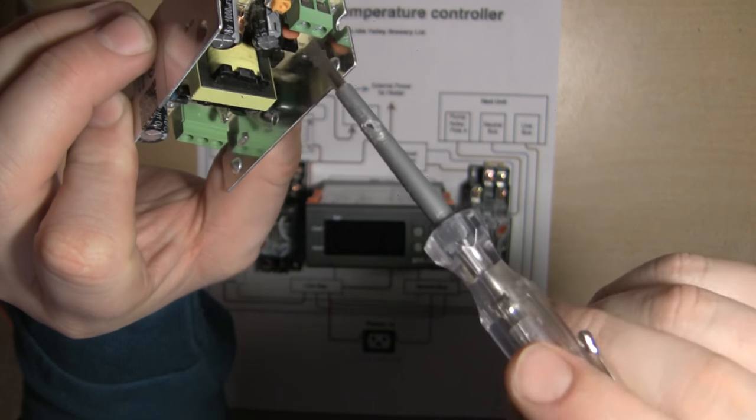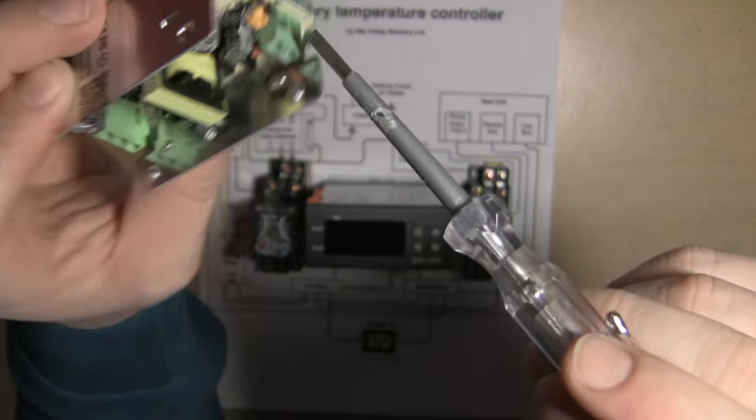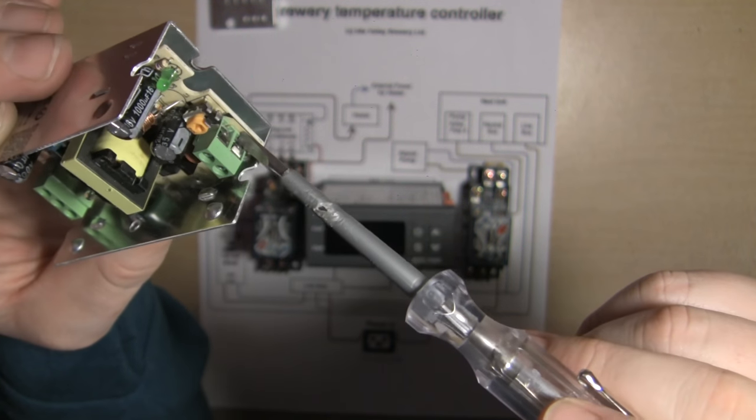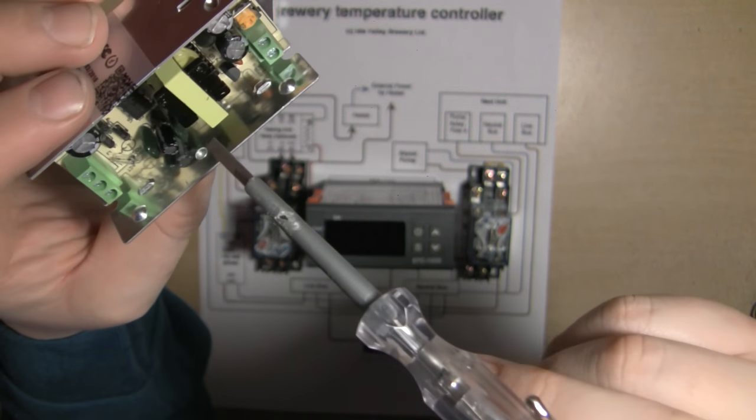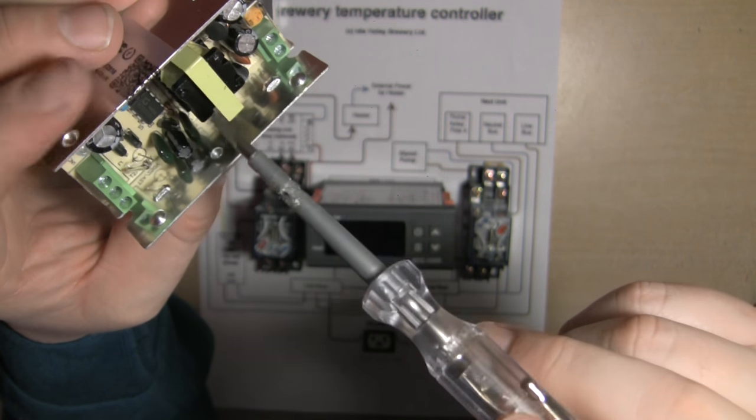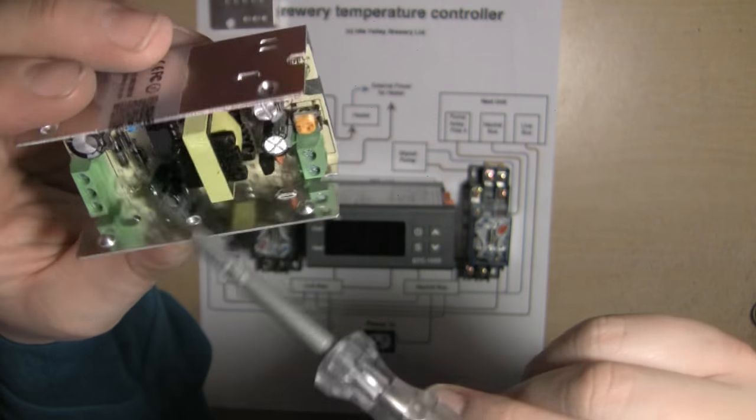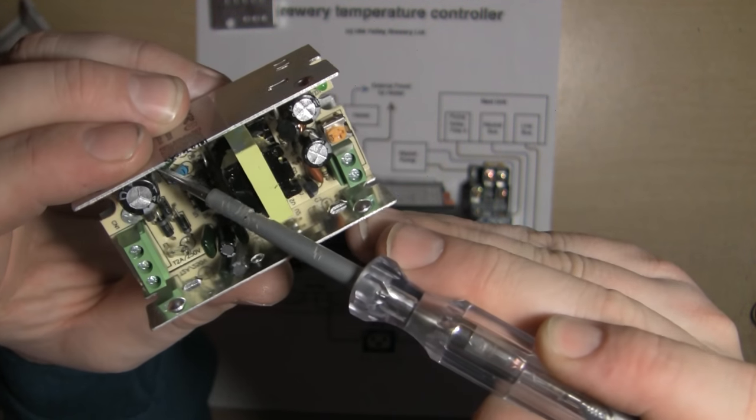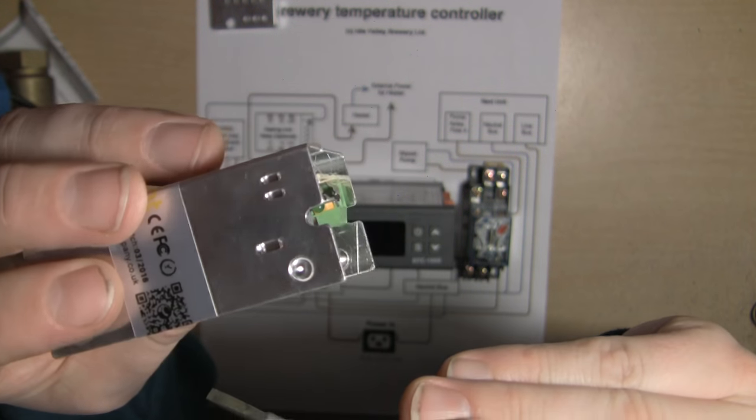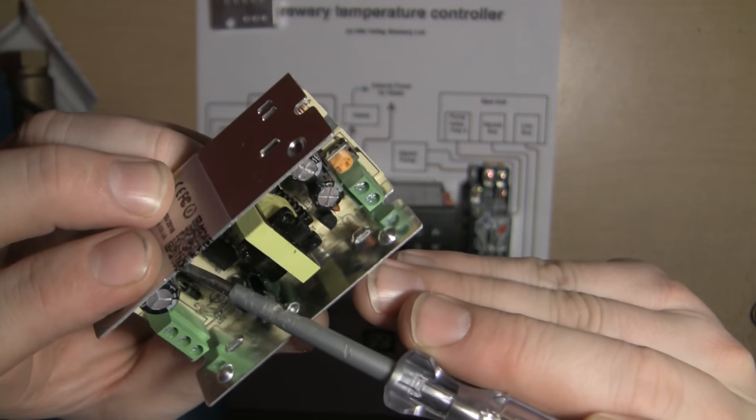Then it gets taken down, stepped down to 12 volt DC through this transformer, and you get your 12 volts out on these two pins. If you want to see a breakdown of one of these, go across to BigClive.com—his channel takes these apart all the time.